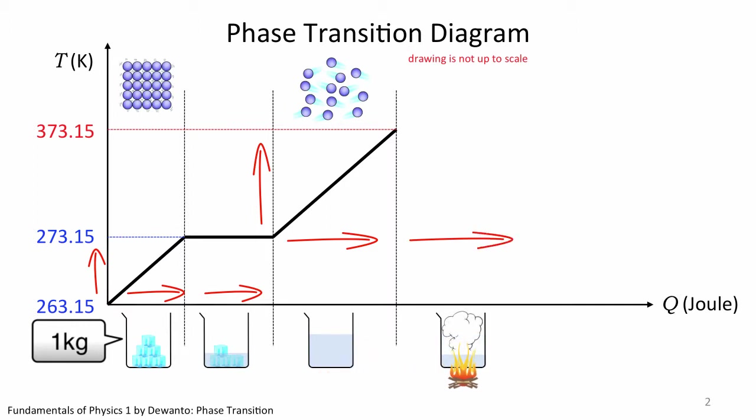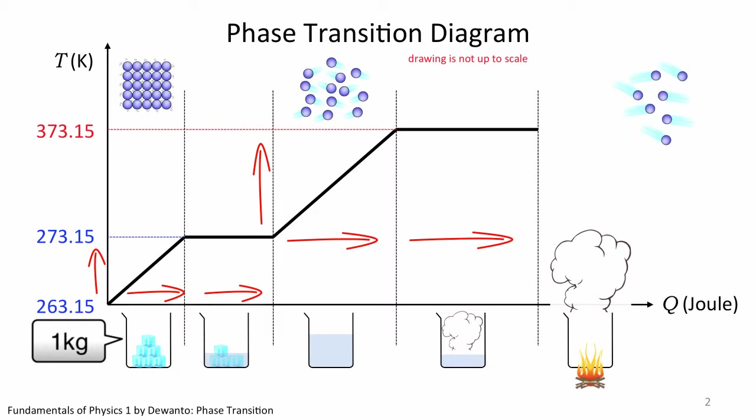Further supply of heat will cause water to evaporate into water vapour or steam. Similar to the melting of ice, the evaporation of water involves no increase in temperature. The heat supply is required to break the already weakly bonded H2O molecules in the water, into freely moving H2O molecules in the steam. At the end of this stage, we have 1 kg of steam at 100 degree Celsius. And if we heat this steam some more, it will definitely increase the temperature of the steam as expected.